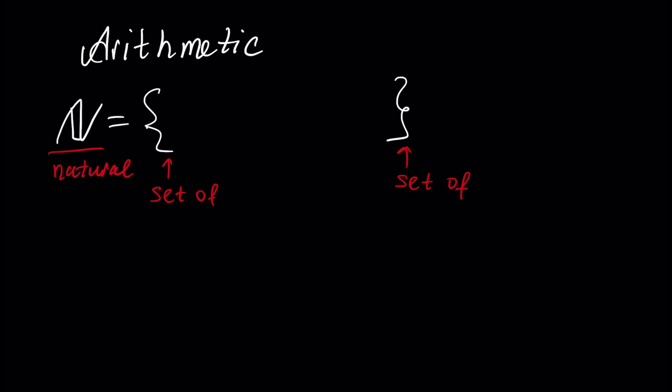Natural numbers is the set of numbers 0, 1, 2, 3, and so on. It's very important to understand that sometimes natural numbers are defined as the numbers 1, 2, 3, and so on — without 0. But I prefer to define natural numbers with 0.